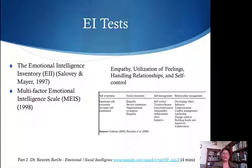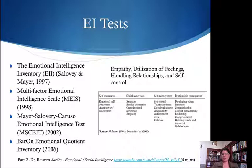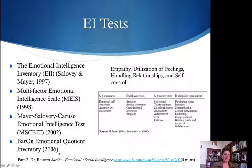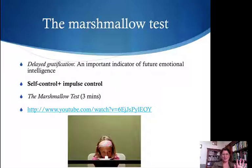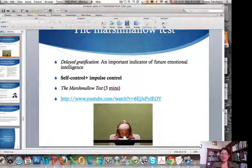There exist a ton of tests if you want to test emotional intelligence, but they all basically measure four key things: things related to empathy, utilization or management of feelings, handling relationships with others, and controlling oneself — going back to the same points that Mayer and Salovey were pointing to. If you like, there is the more sophisticated Bar-On model, with a three-part video available online that gives short summaries of what these tests actually measure. One test I absolutely love is the marshmallow test — a test of delayed gratification, which happens to be an incredibly important indicator of future emotional intelligence.